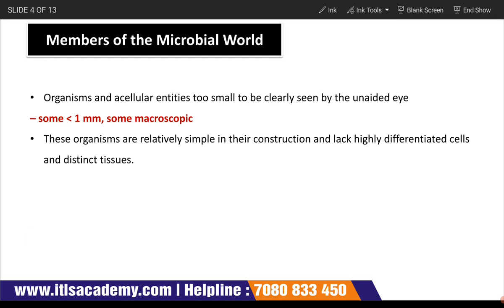Members of the microbial world are organisms and acellular entities too small to be clearly seen by the unaided eye. These are organisms that you cannot see with your naked eyes but need a certain type of microscope to visualize. Some are more than 1 mm, some are very microscopic. These organisms are relatively simple in their construction and lack highly differentiated cells and distinct tissues.